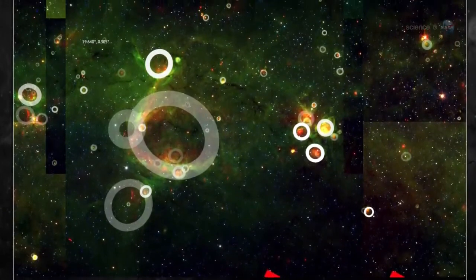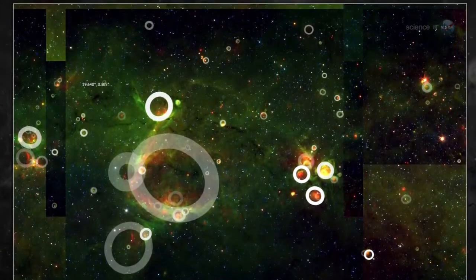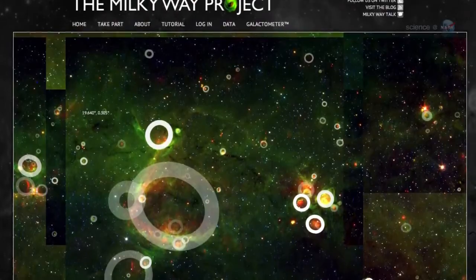Bressert is a professional astronomer who has been analyzing data from the Milky Way Project, which harnesses the power of citizen scientists to explore space.